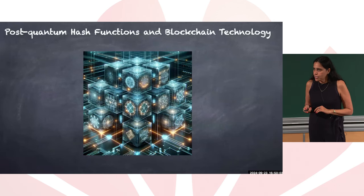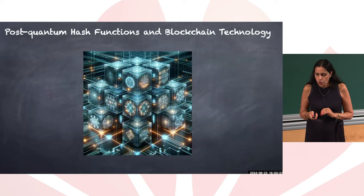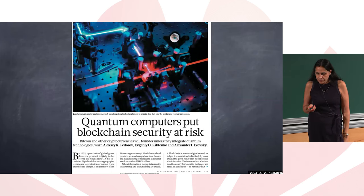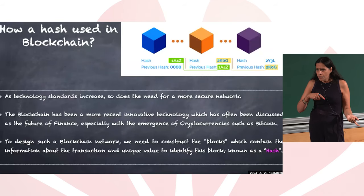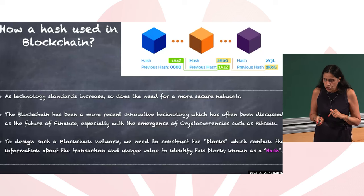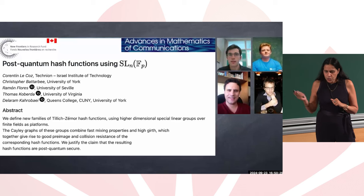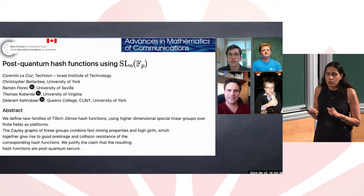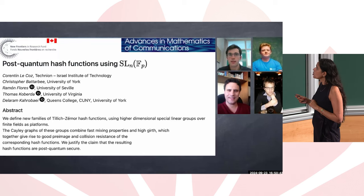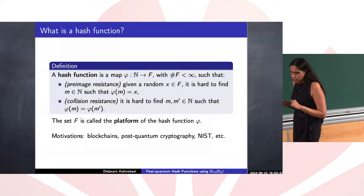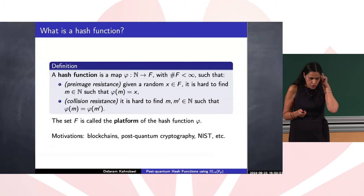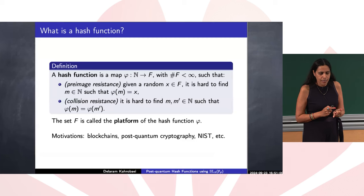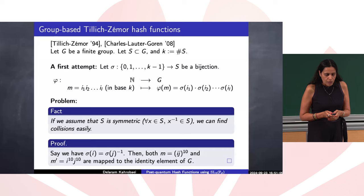In this part, I would like to mention about the post-quantum hash functions and blockchain technology. You know that quantum computers put blockchain security at risk. There is a natural connection with hash function applications in blockchain technology. We just published this paper and just patented it. It's an application of special linear groups, SL(n,F_p). It's a post-quantum hash function. I will tell you quickly about the definition of hash function. It's a map phi from natural number to some finite set F, such that it's pre-image resistant and it's collision resistant.